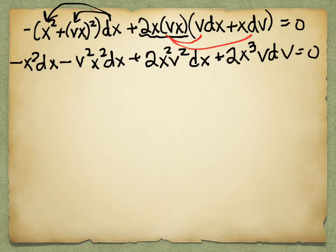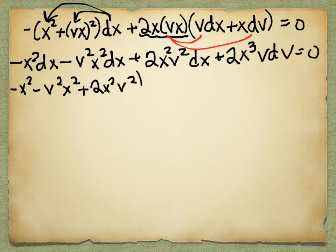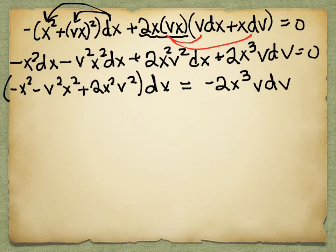To separate variables, divide both sides: divide the left by (-1 + v²) and the right by x³. The x² over x³ gives 1/x on the left, and the x³ cancels on the right, giving: (1/x)dx = -2v/(-1 + v²)dv. That's a very clean separation — the left side you already know the antiderivative of, and the right side calls for a u-substitution.